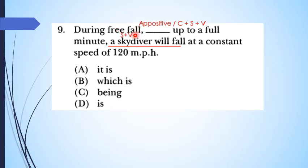Oleh karena itu kita memilih pilihan yang kira-kira bentuknya adalah konektor subjek predikat. Sehingga kita tidak memilih yang noun phrase. Pilihan A, B, C, D-nya kita tidak ada yang bentuknya noun phrase. Yang salah pertama adalah pilihan A karena dia memiliki subjek verb, tidak ada konektornya. Yang kedua yang kurang tepat juga adalah pilihan being saja. Yang D, verb saja juga tidak tepat. Sehingga kita perlu memilih which is up to a full minute. Jadi which-nya menjadi konektor plus subjek. Kita tidak punya pilihan yang positif, maka kita pakai susunan konektor.